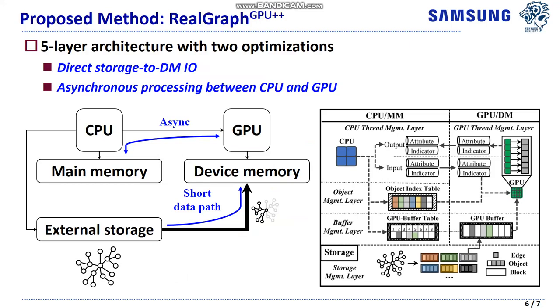Therefore, we propose RealGraph GPU++, equipped with two optimization ideas — direct storage to DMIO and asynchronous CPU processing — to address these two IO-related issues.